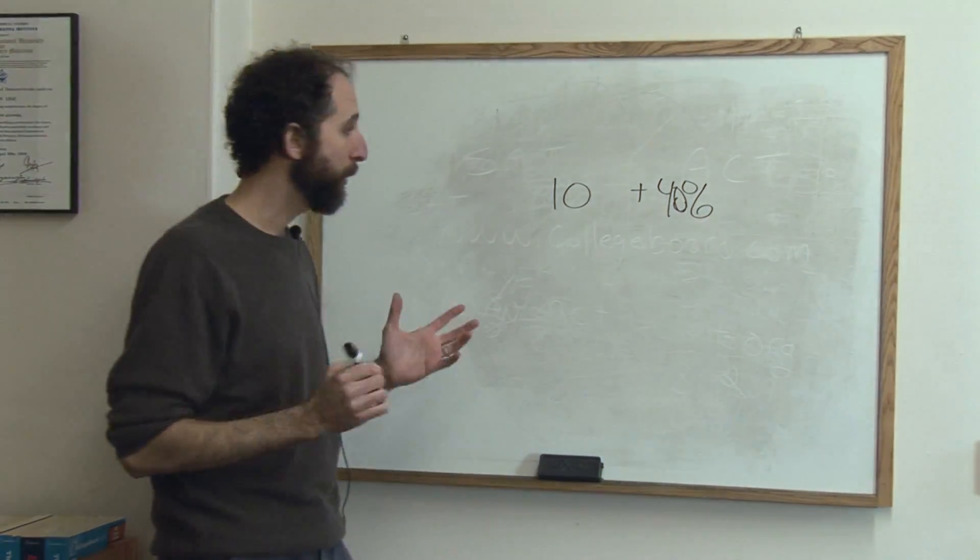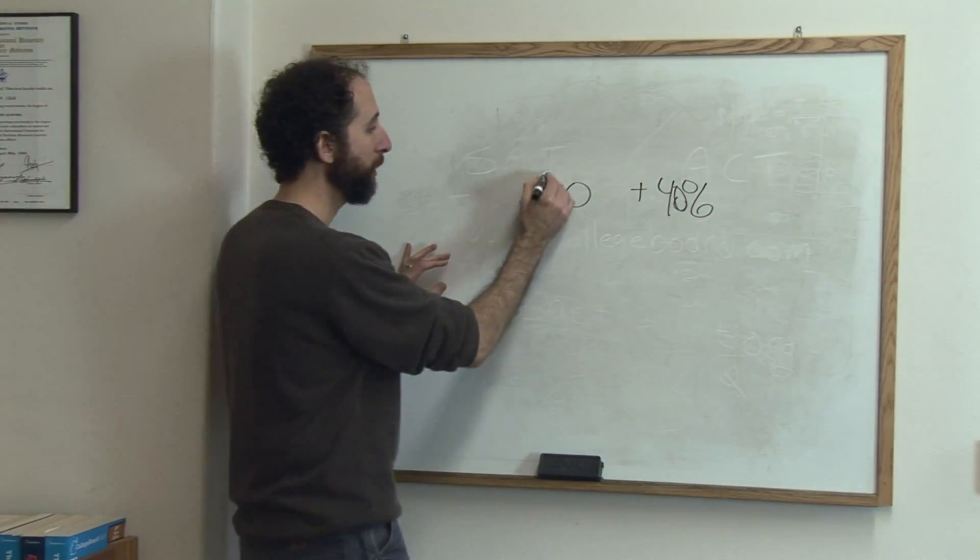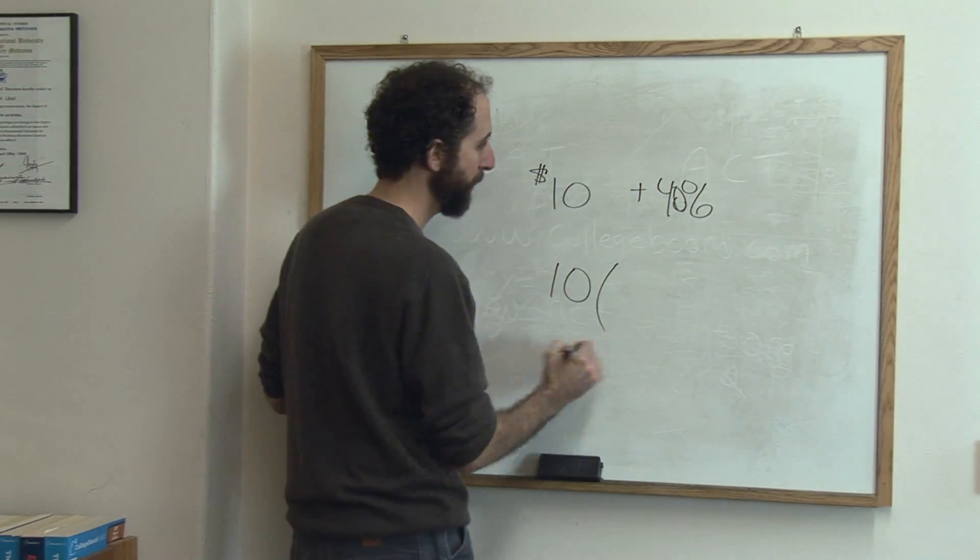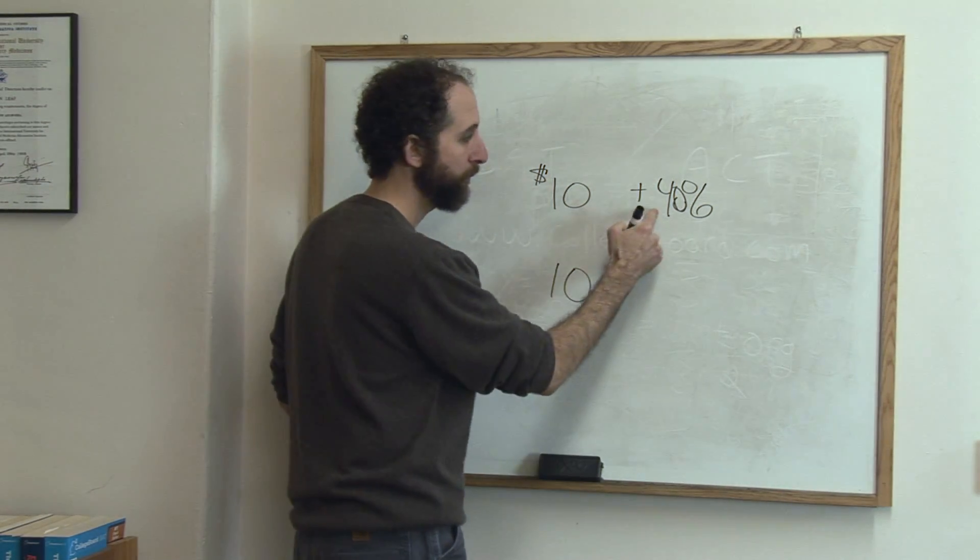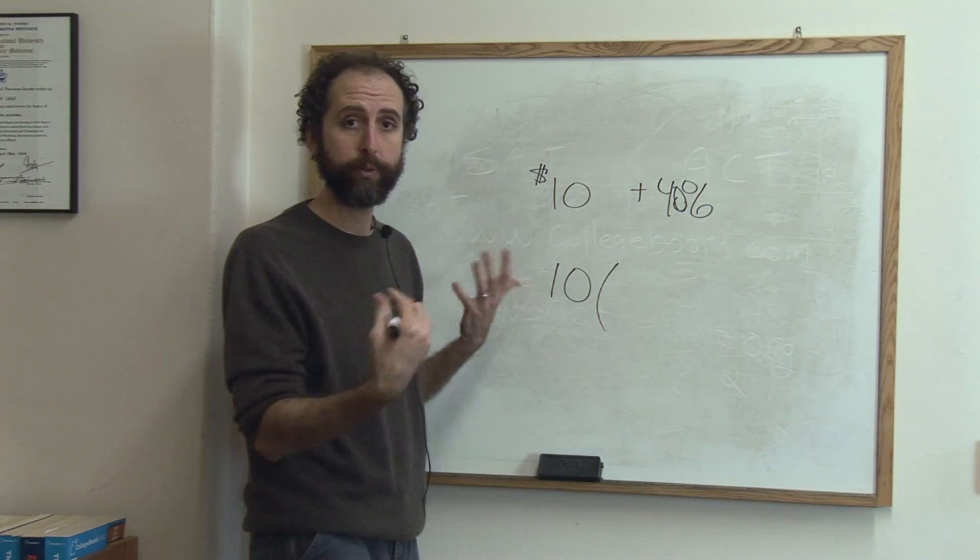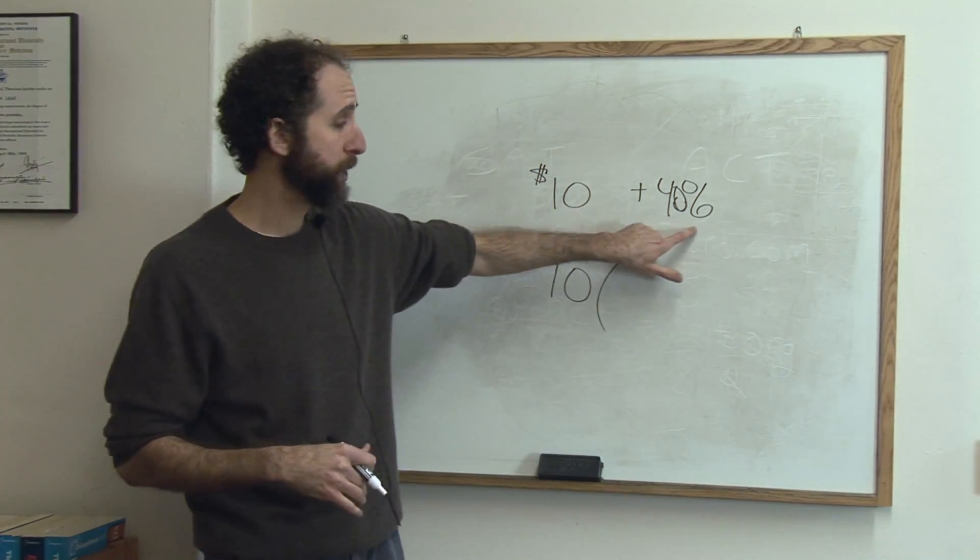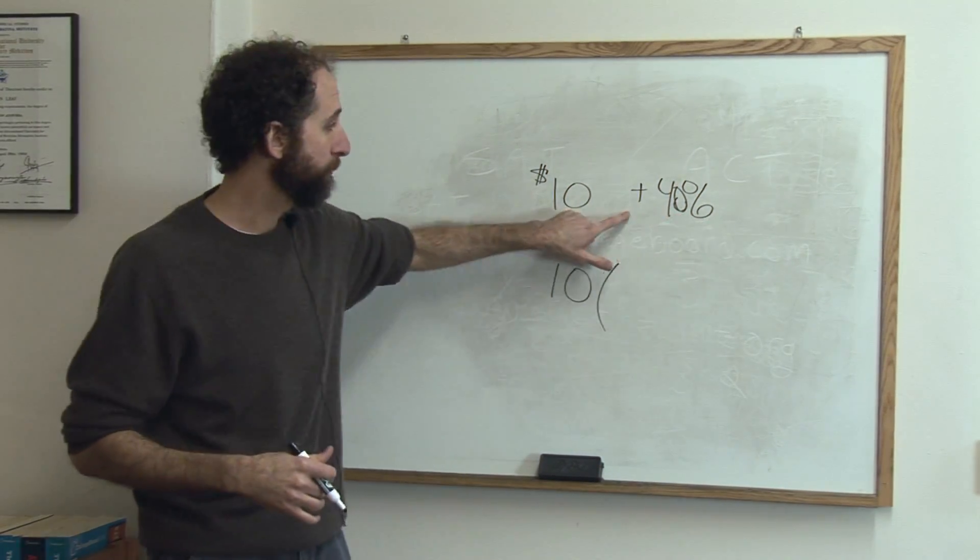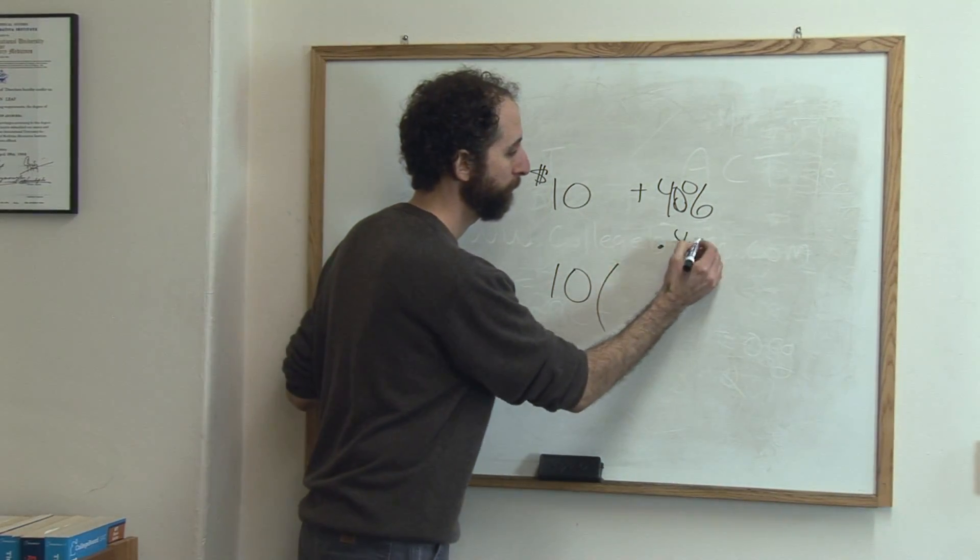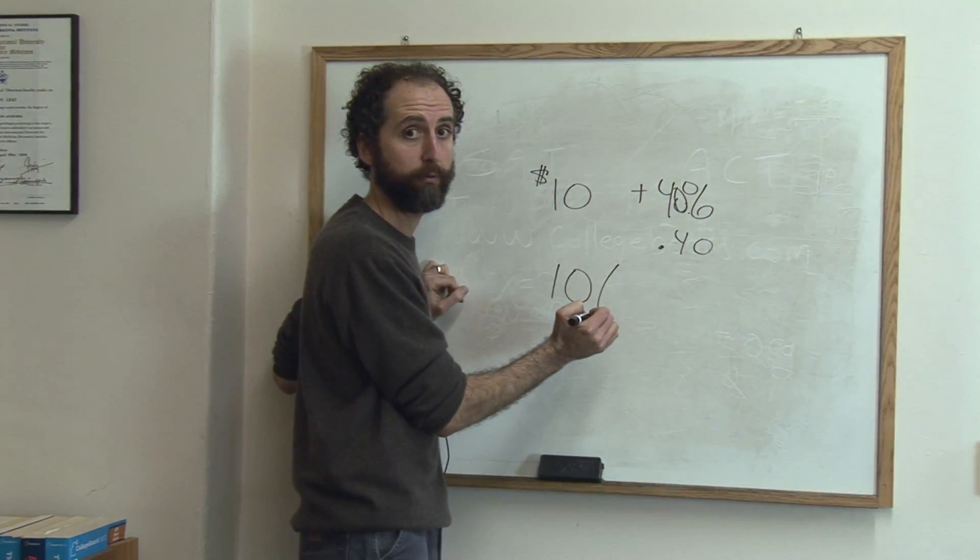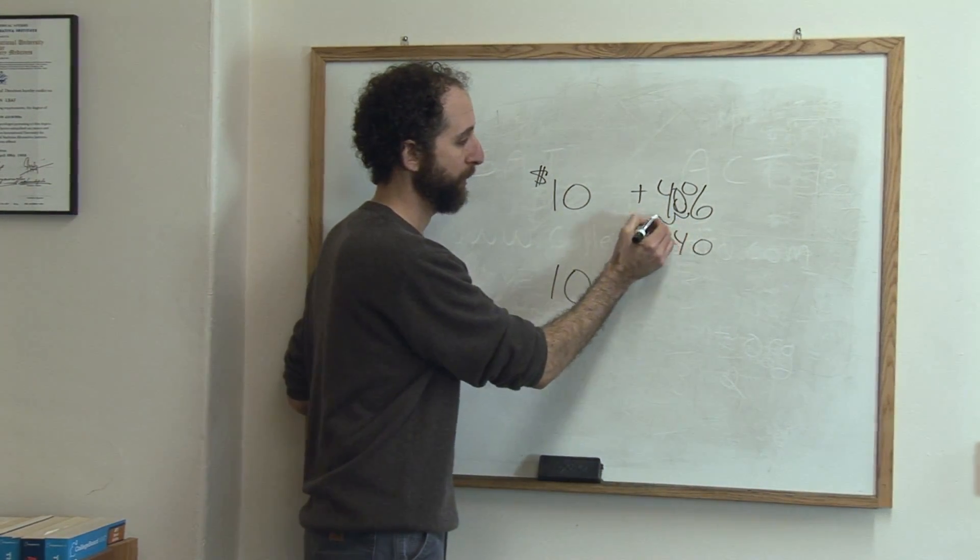The way you would calculate that is you would take the cost to them, the starting amount, and you would multiply that amount. To use it in our calculator, we need to turn this percent into a decimal. So 40% becomes .40. Essentially you just take the decimal spot, which is assumed to be there in 40, and you move it over two spots.